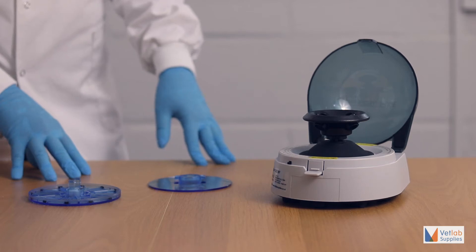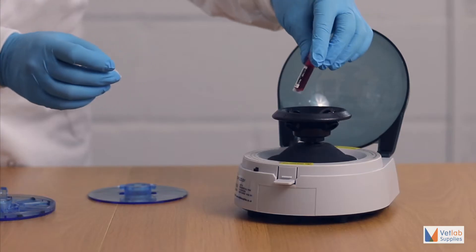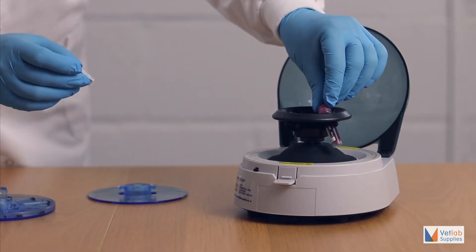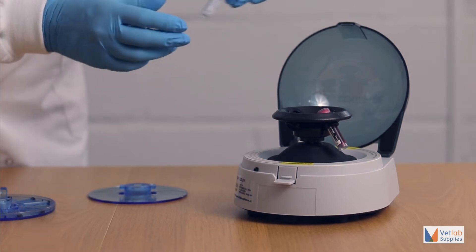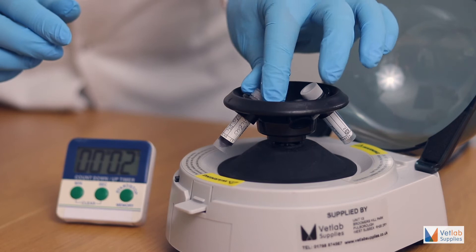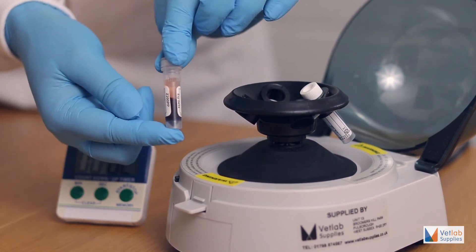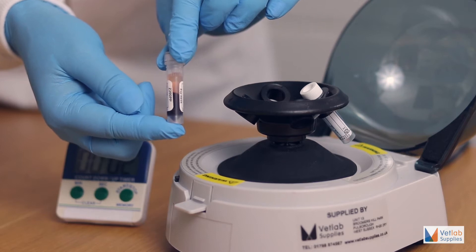The Vetspin Micro is a mini benchtop centrifuge designed for spinning small volumes of biological fluids. Our Vetspin Micros are ideal for separating serum or plasma from blood cells in whole blood samples. They perform micro hematocrit estimations on anticoagulated blood samples and prepare urine for sediment examinations.